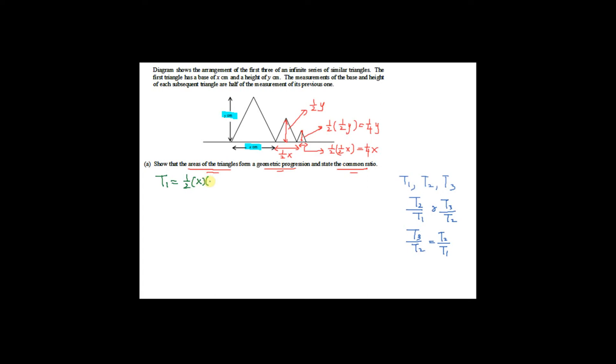T1 is the area of the first triangle: half times base X times height Y, so the first term is (1/2)XY. The second term is the area of the second triangle: half times base (X/2) times height (Y/2), which equals (1/8)XY.